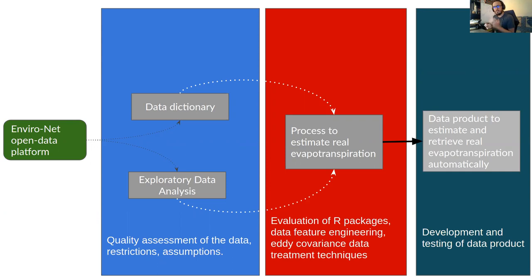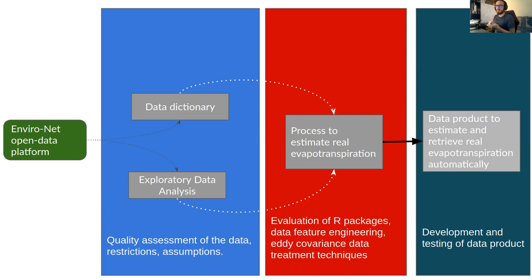The first step was to create data dictionaries where we map all the variables in the datasets and describe them as they come out from the raw data — with all the missing values, outliers, distributions, and definitions.